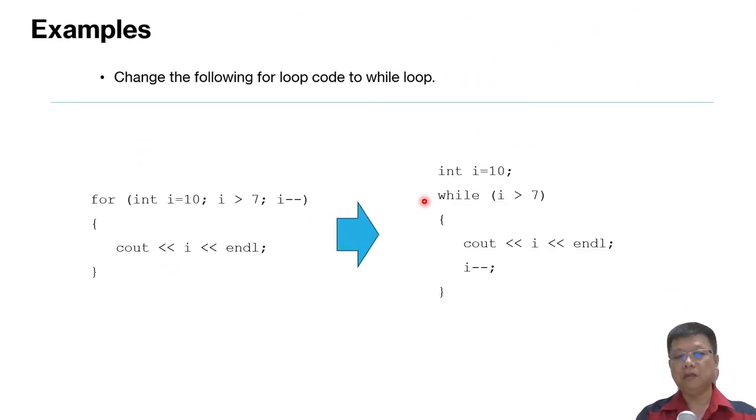Well here is the result. Integer i equal to 10, move it here, one line before the while loop start. And then the for change to while. The condition maintained, no change, but we have to remove the semicolon. And then next, cout maintained, but the decrements of i value we put it here. So this is how we change a for loop to the while loop. I hope you get this.